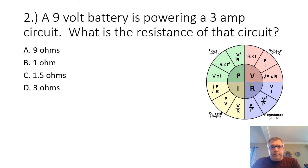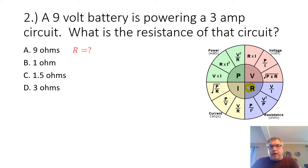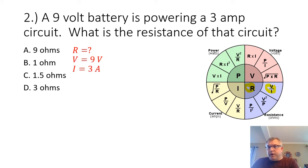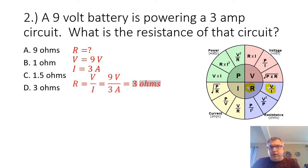Problem number two: a 9-volt battery is powering a 3-amp circuit. What is the resistance of that circuit? We're looking for the resistance, and our given values are the voltage and the current. Our formula is R equals V divided by I. 9 volts divided by 3 amps gives us 3 ohms.